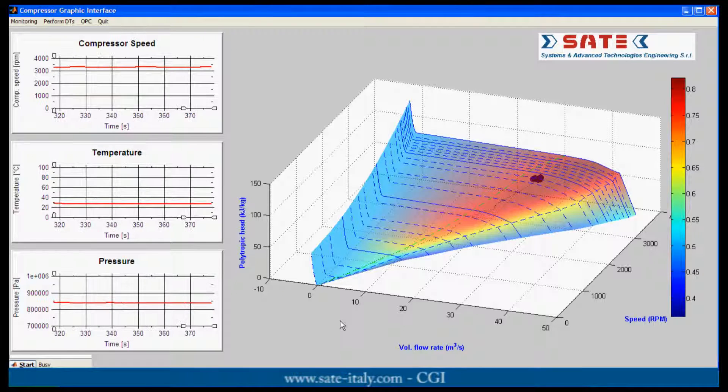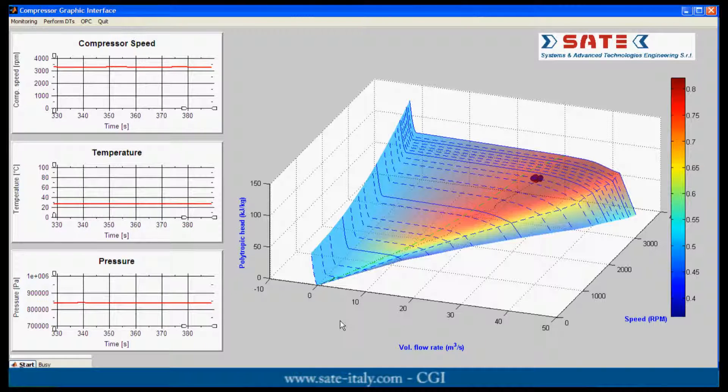SATE diagnostics tools can be easily integrated in the CGI. These tools provide a comparison between the real signals acquired by transducers and the output of a mathematical model of a normal compressor machine. Patterns of abnormal deviation from such model allow detecting potential faults.